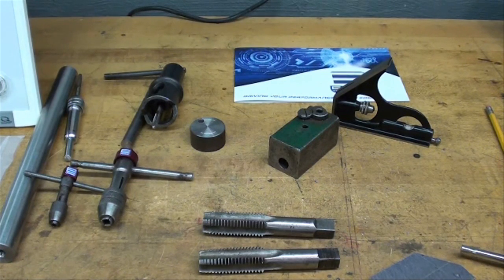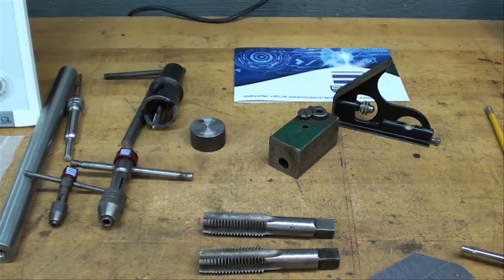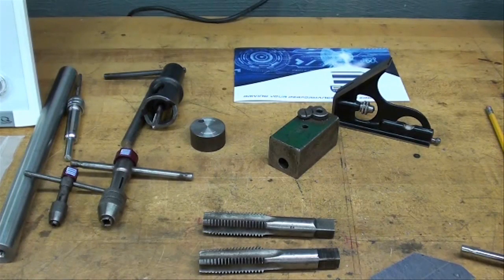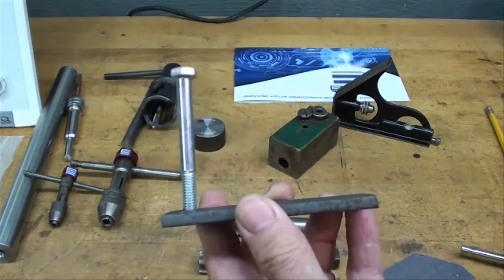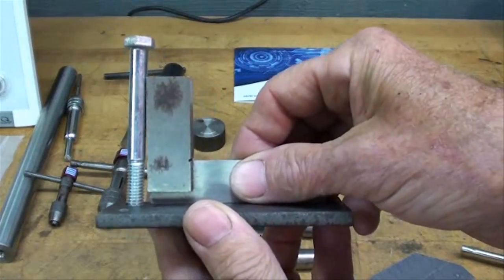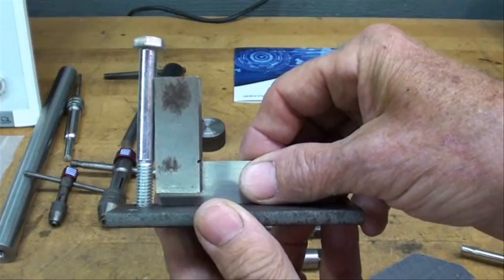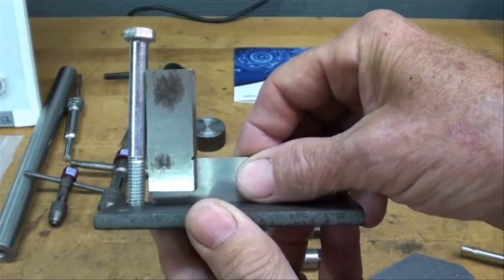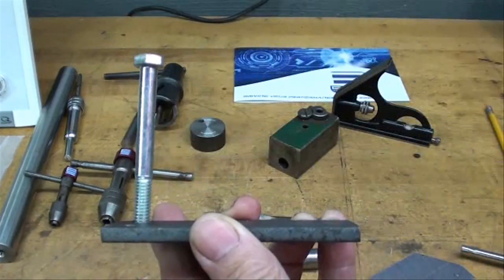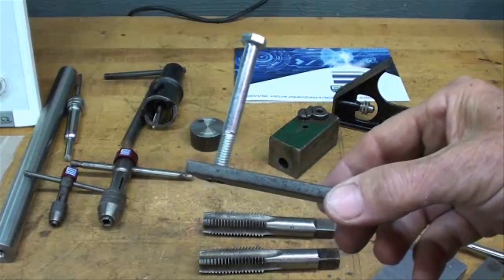It's very easy to tap a crooked hole and tapping a crooked hole is one of the leading causes of tap breakage. Here's a piece that I have tapped crooked on purpose, but notice when I hold a square up to it that we're off considerably. Even though you have drilled a straight hole, it's possible to tap it crooked by just being careless.